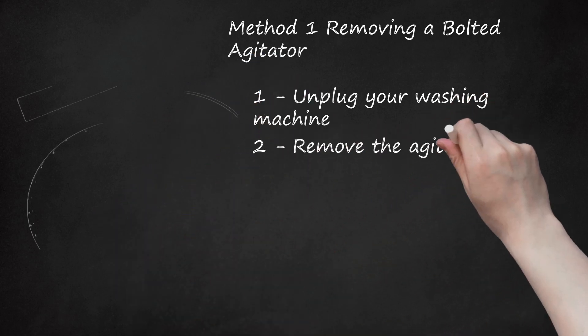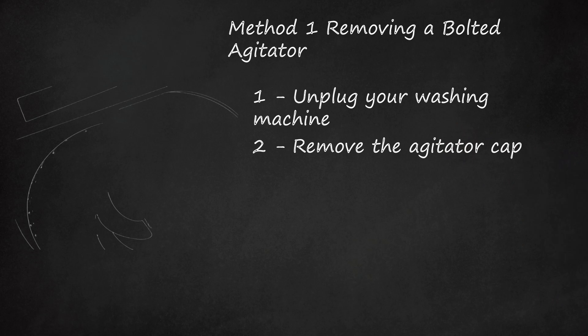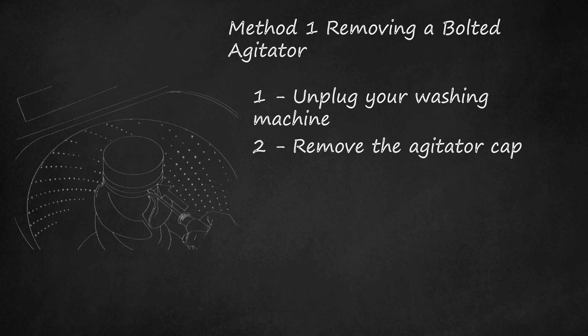Step 2: Remove the Agitator Cap. Many models of GE washer have agitators that are mounted in place with a single metal bolt, specifically compact washers 1996 and earlier, regular 1992-1995 models, and hand wash agitator models. To remove agitators on these models, this fastening bolt must first be removed. To access the bolt, remove the cap at the top of the agitator. This can usually be done either by hand or by prying with a screwdriver.